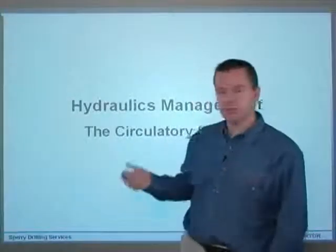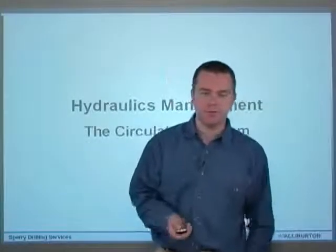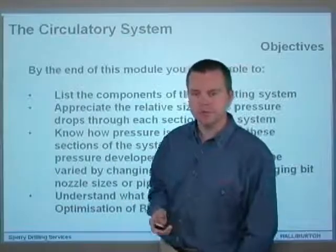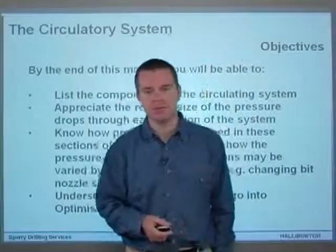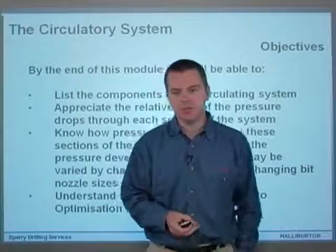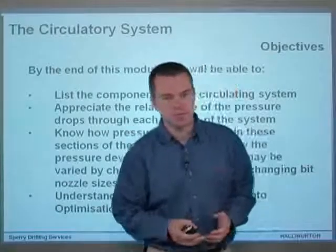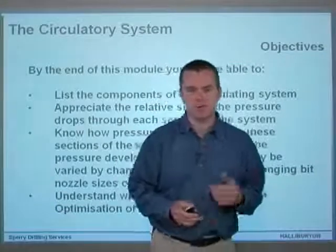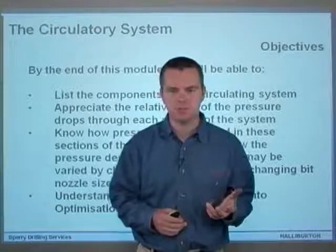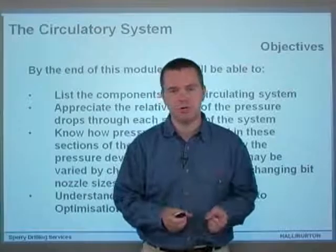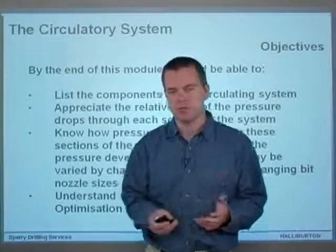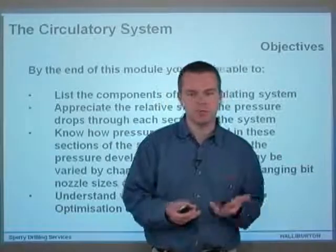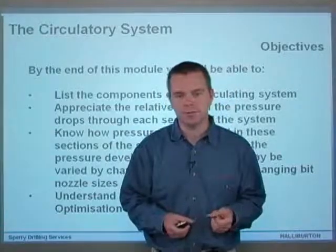Let's take a look at the actual circulatory system itself. By the end of this module, you'll be able to list the components of the circulating system, appreciate the relative size of the pressure drops through each section of that system, and know how the pressures are developed in these sections. You'll also learn how pressure can be varied by changing parameters within the system, such as changing the bit nozzle size or the pipe diameters.